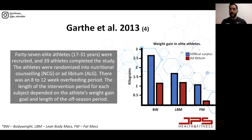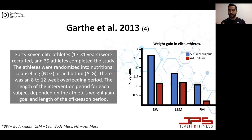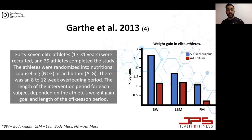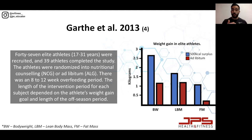The 500-calorie surplus group gained over 2.5 kilos throughout the intervention period; the ad libitum group gained less weight. When it comes to lean body mass, the 500-calorie surplus group gained slightly more — about half a kilo more. But if you look at fat mass gains, the 500-calorie surplus group gained a lot more fat mass.